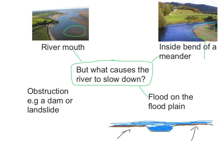The final reason for a river to slow down is if there is an obstruction in the river. This may be because there is a huge dam wall in the way, or there might have been a landslide. Whatever the reason, the river is forced to slow down, and if it slows down it loses energy and deposits anything that it's carrying.